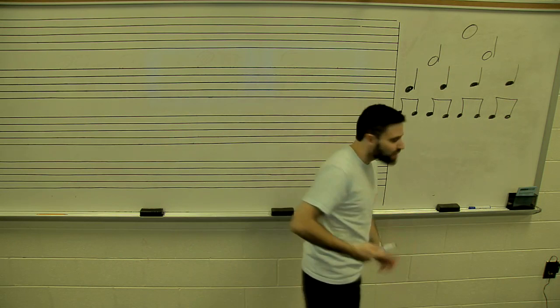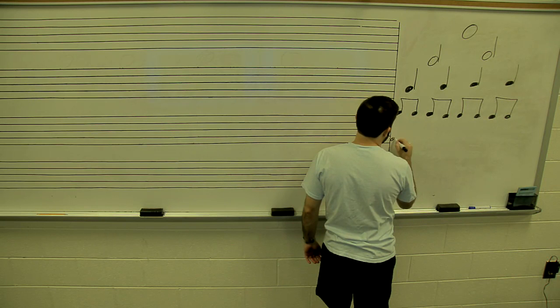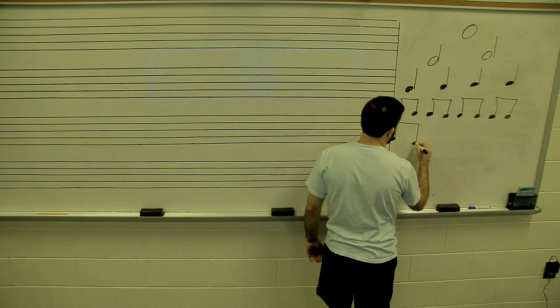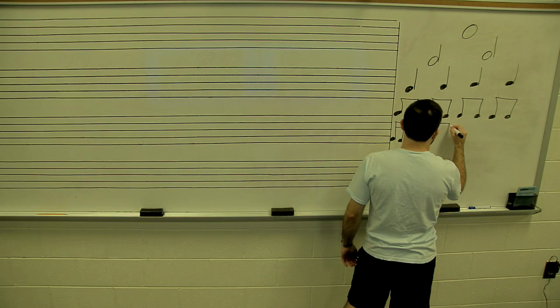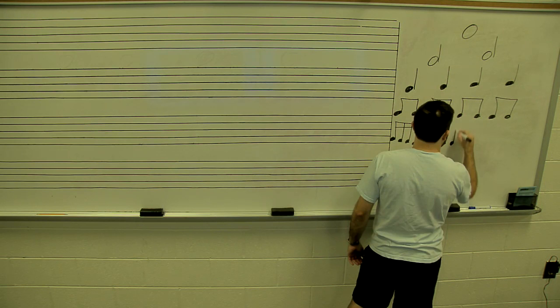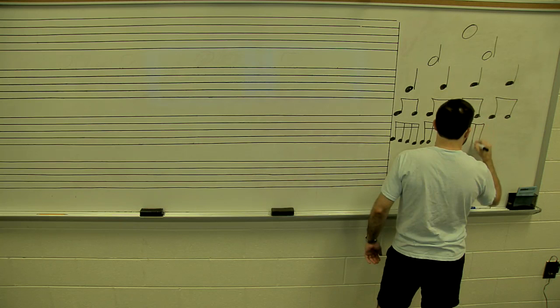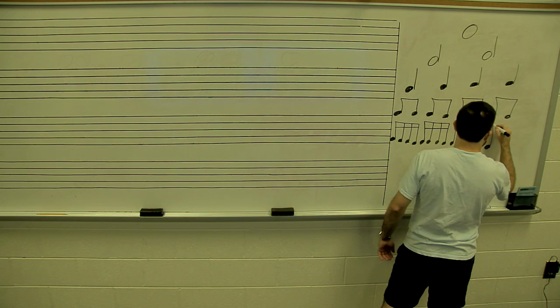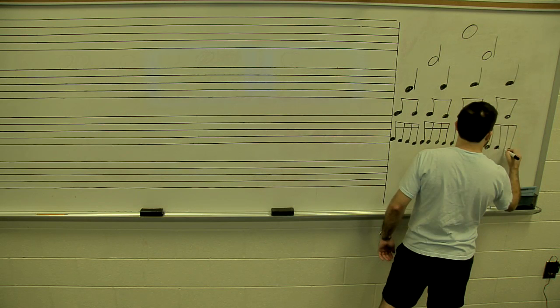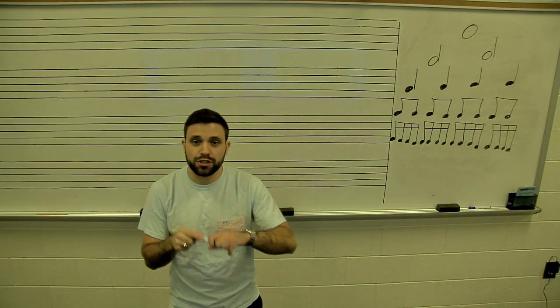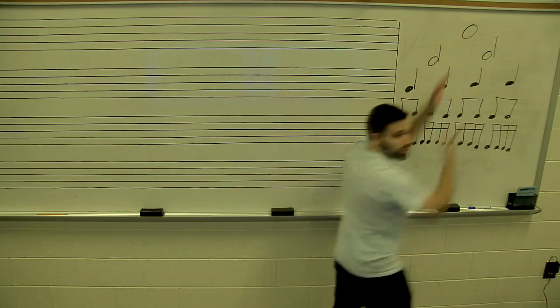And then finally, sixteenth notes and sixteenth note rests. Usually sixteenth notes we will beam together in groups of four. So this is the rhythmic tree — the full rhythmic tree. You can see it's kind of like a tree because it's big at the bottom and gets slimmer at the top.